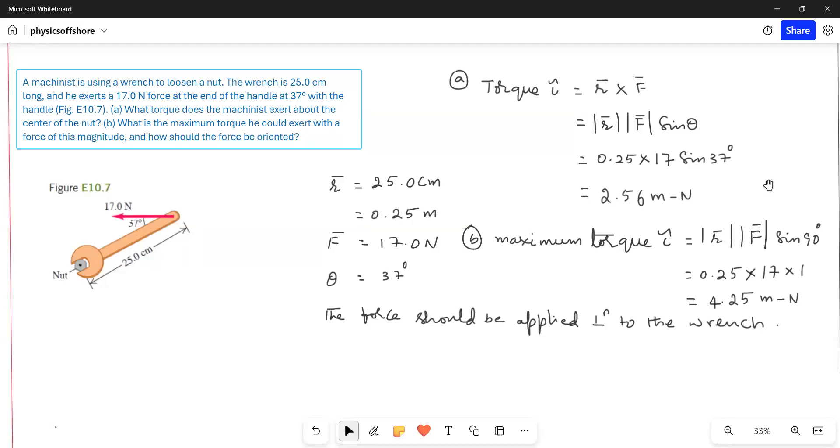A machinist is using a wrench to loosen a nut. The wrench is 25 centimeters long and he exerts a 17 Newton force at the end of the handle at 37 degrees with the handle. Part A: